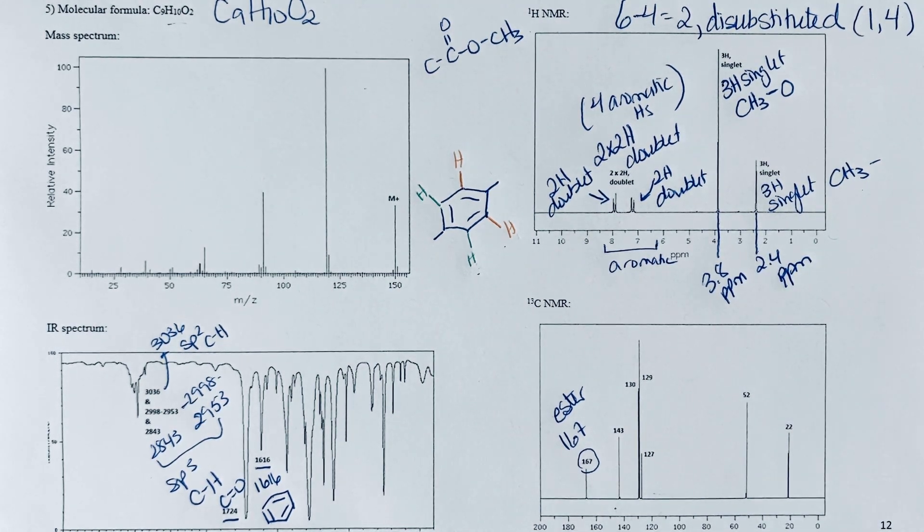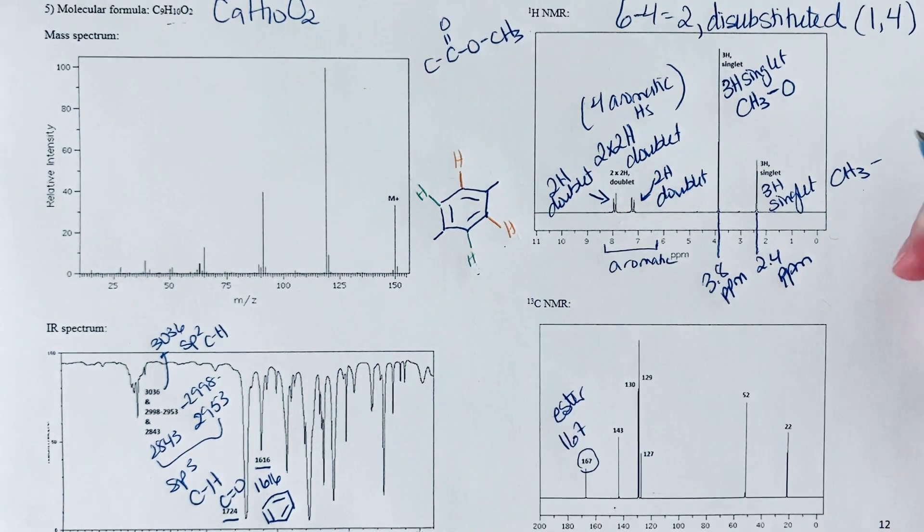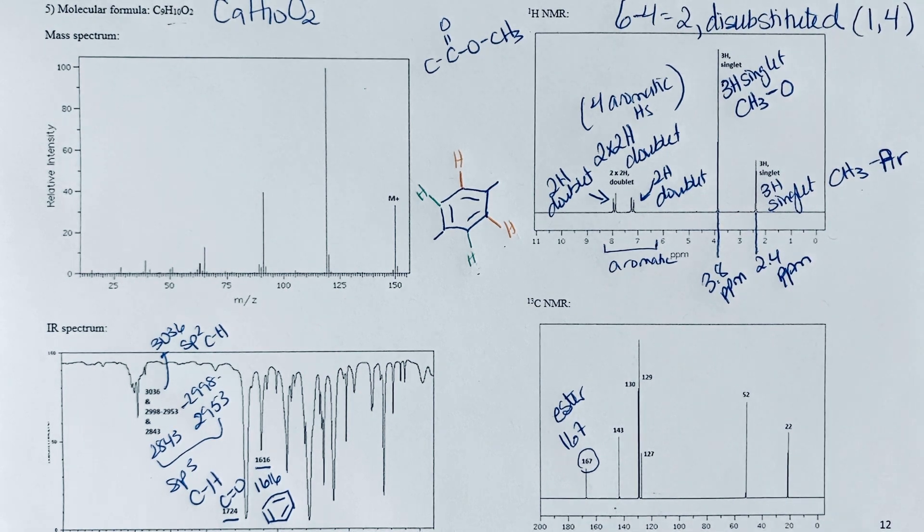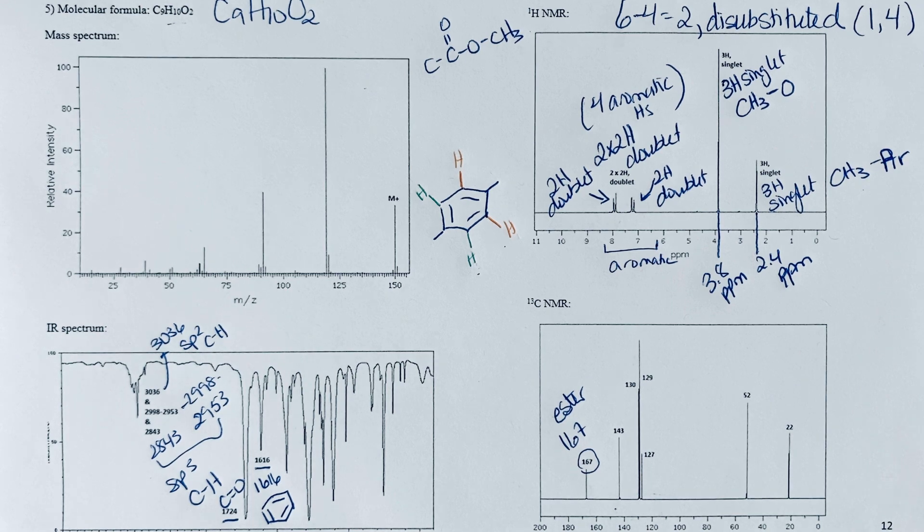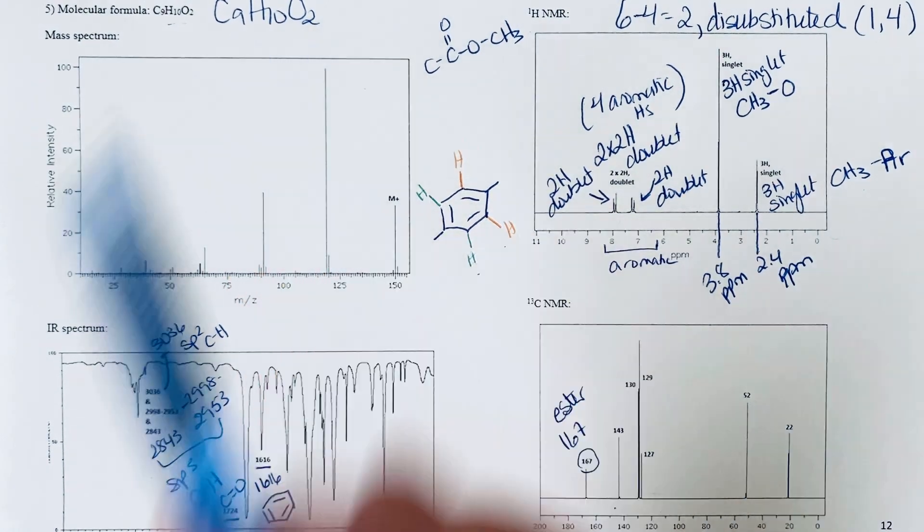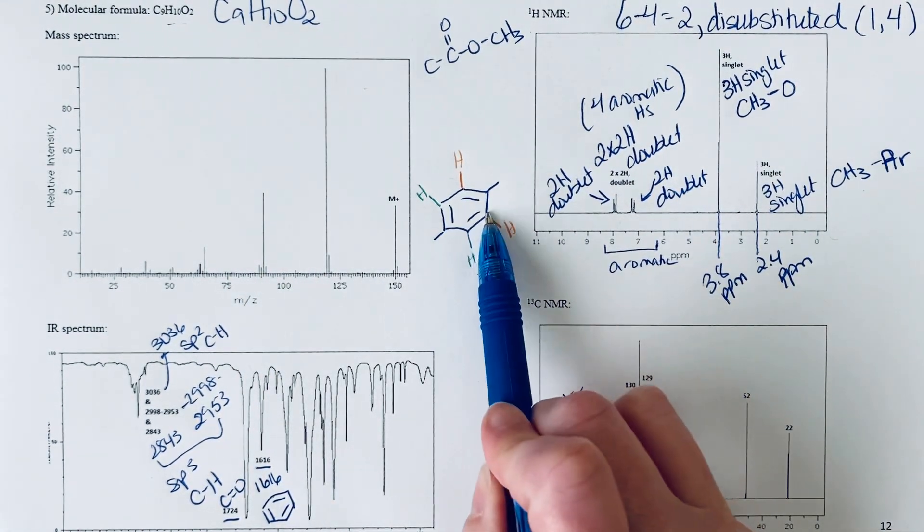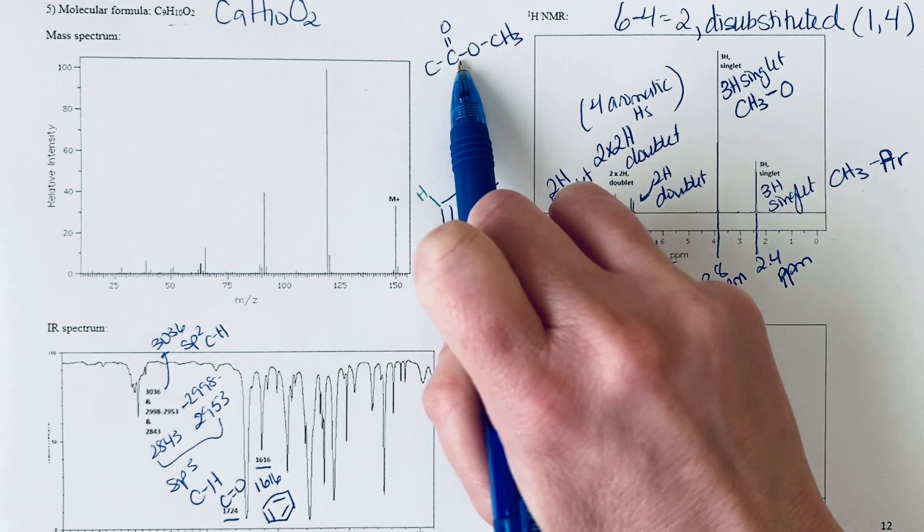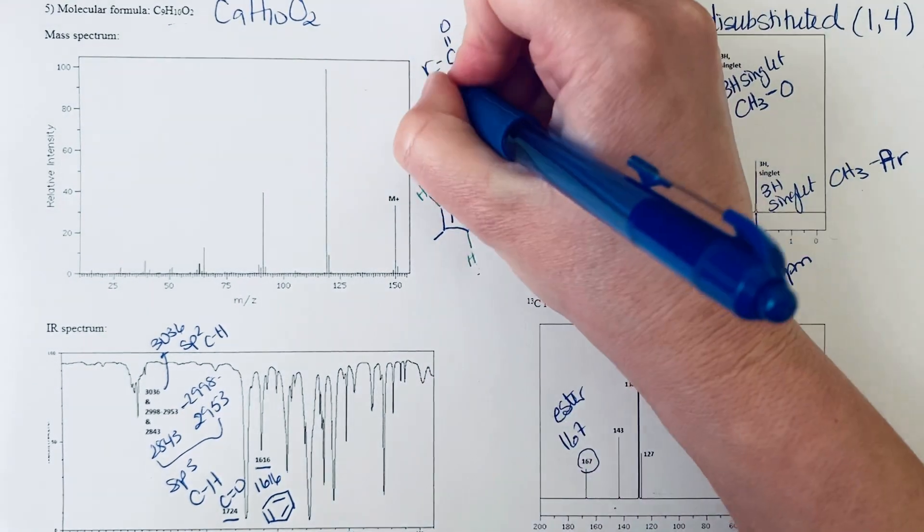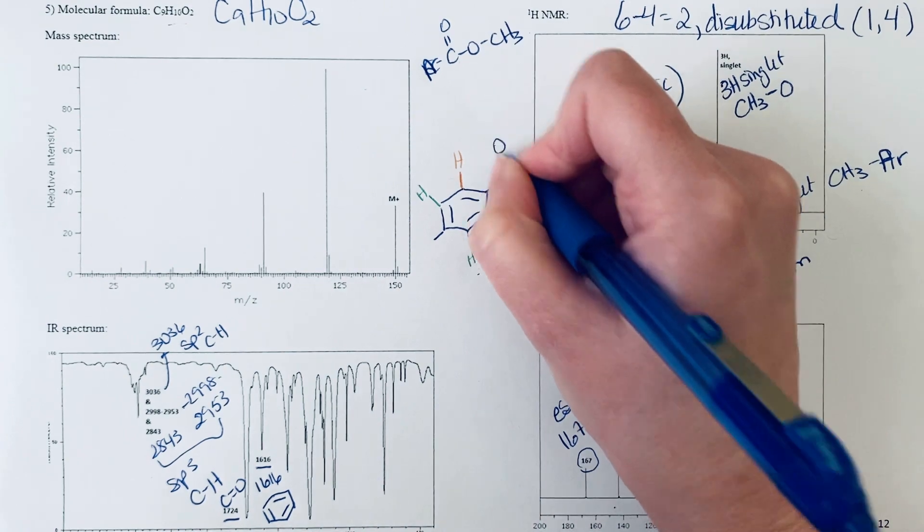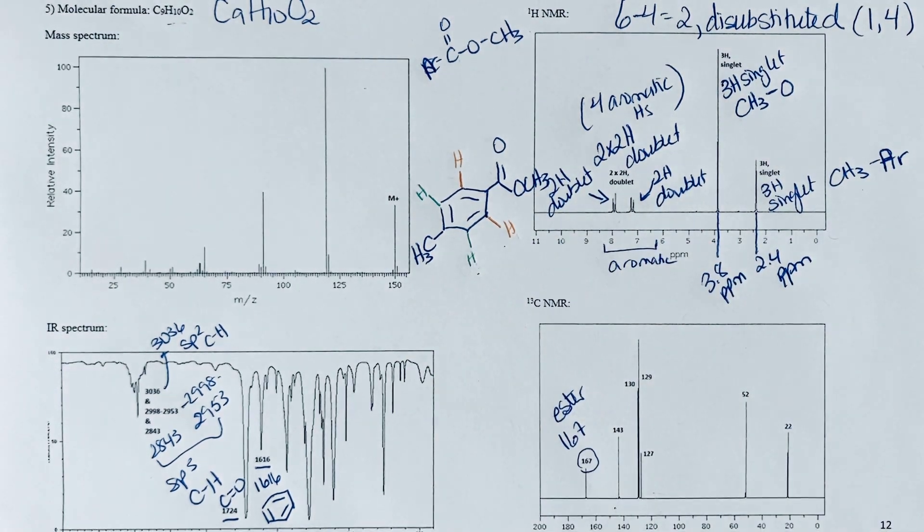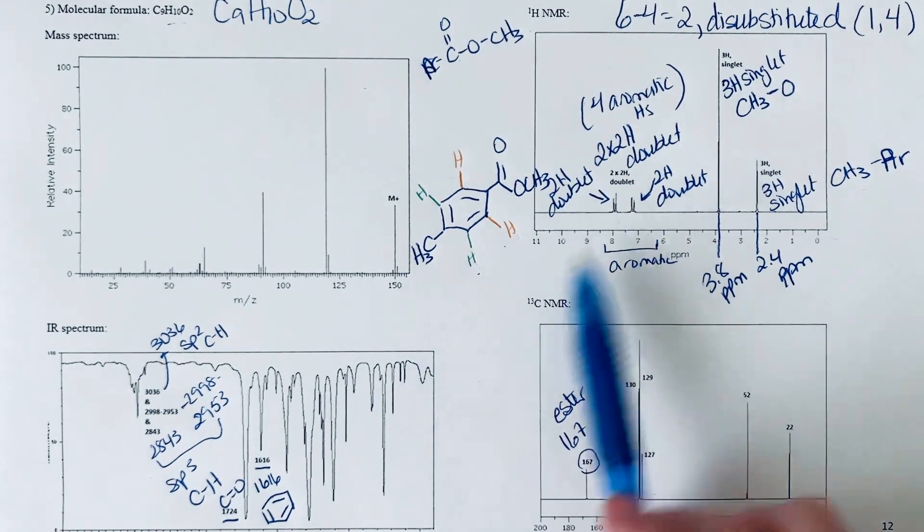This other three hydrogen singlet is about 2.4, so that's going to be allylic to something, to some sort of pi bond. The only thing we have left is the benzene ring, so that's attached to that aromatic ring. At this point we have all of the pieces of the molecule because we only had nine carbons, ten hydrogens, and two oxygens. So we've got the ester on one side and directly opposite on the ring we have a methyl group.